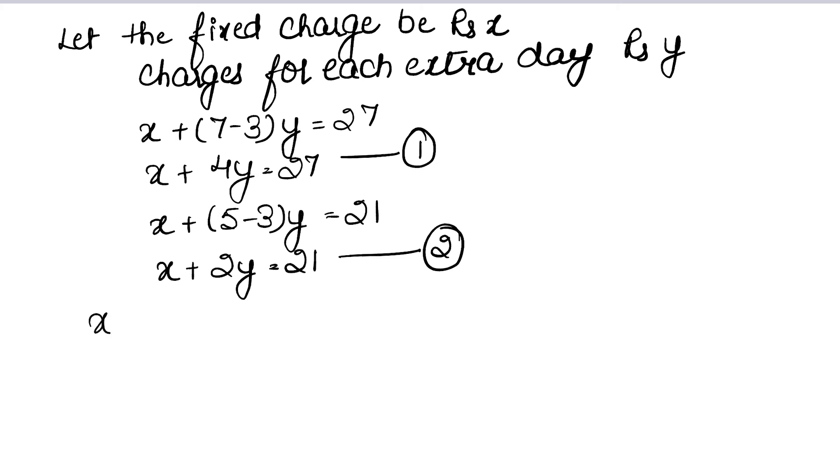Now we have written both equations: x plus 4y equals 27, this was our first equation, and x plus 2y equals 21, this was our second equation.